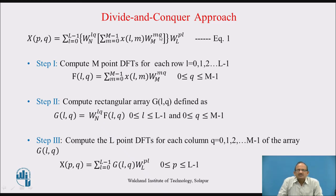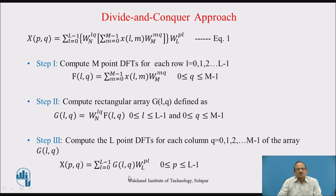In the third step, G(l, q) is a 2D array of L rows and M columns. We compute the summation over l = 0 to L−1 of G(l, q)·W_L^(pl), which is the L-point DFT of each column. For q = 0 it is the first column, q = 1 the second column, and so on. We store the result as X(p, q). The total size is L × M = N, giving the N-point DFT, which is then collected row-wise.